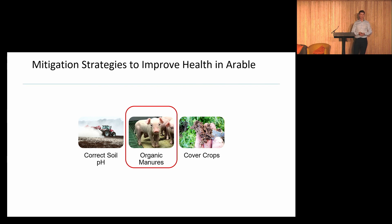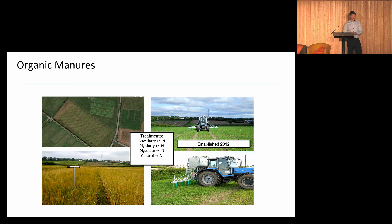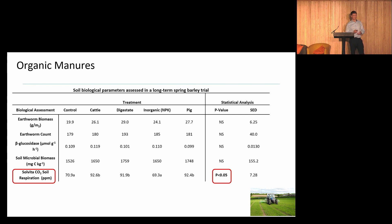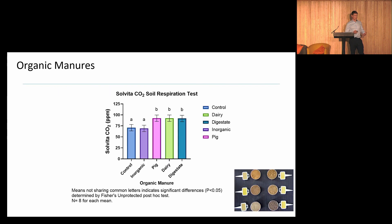The next mitigation strategy is organic manures. Findings here are based on a COMMS experiment set up at Cross Nácrevy in 2012 — a continuous spring barley crop receiving different treatments of cattle, pig and digestate slurries, with a control, at different nitrogen rates. Measurements include earthworm biomass, earthworm count, beta-glucosidase, soil microbial biomass, and Solvita CO₂. After four years of application, the only metric showing statistical differences was Solvita — plots receiving organic manures such as pig, dairy and digestate had significantly higher Solvita values than the inorganic or control treatment, showing benefit, but it does take time.